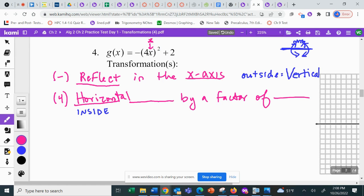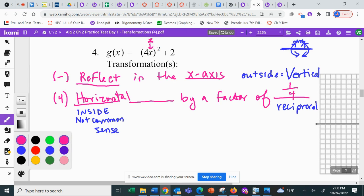Now if it's horizontal, remember inside is like not common sense. So I see a four here. I'm not going to multiply by four. What do I multiply by? One-fourth. What we multiply by is the reciprocal, one-fourth. So if I multiply anything by one-fourth, it gets smaller. This is a shrink.